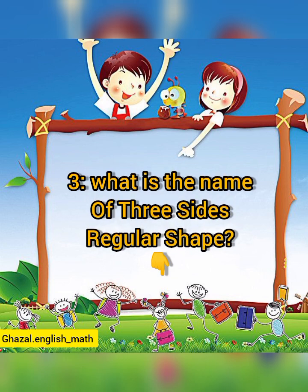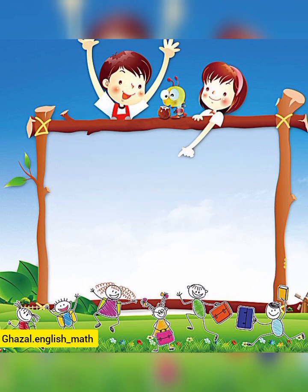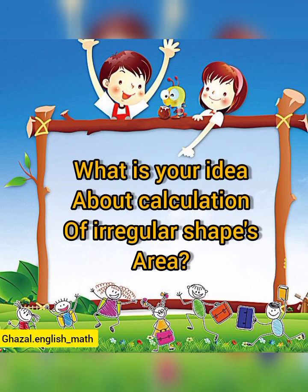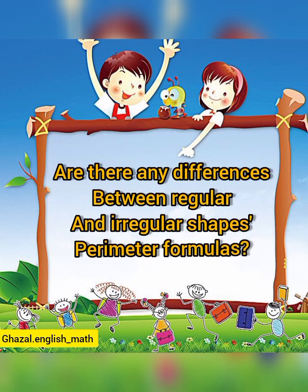Question number three: what is the name of a three-sided regular shape? Question number four: what is your idea about the calculation of irregular shapes' area? And the last question: are there any differences between regular and irregular shapes' perimeter formulas?